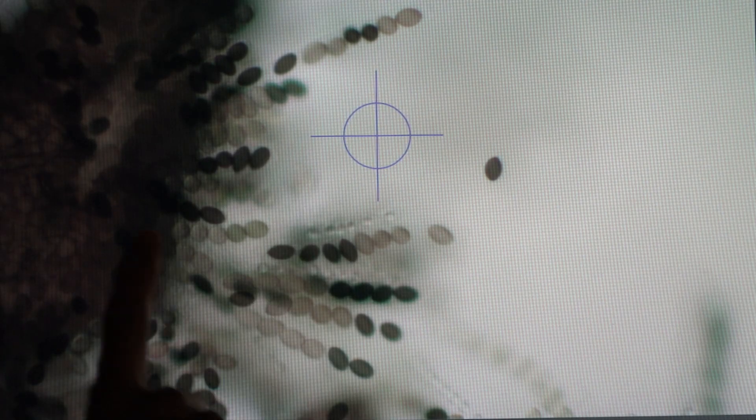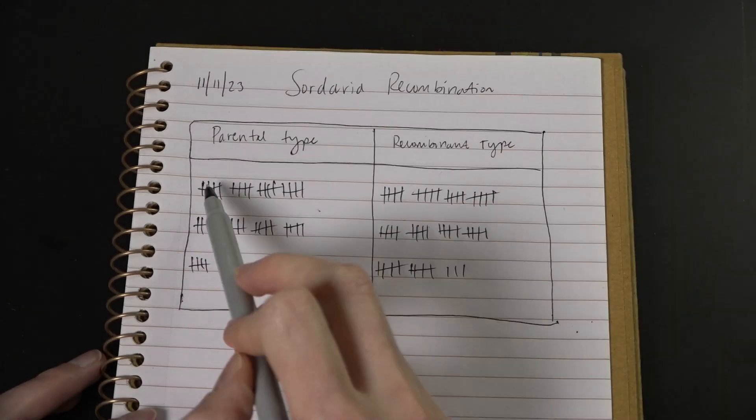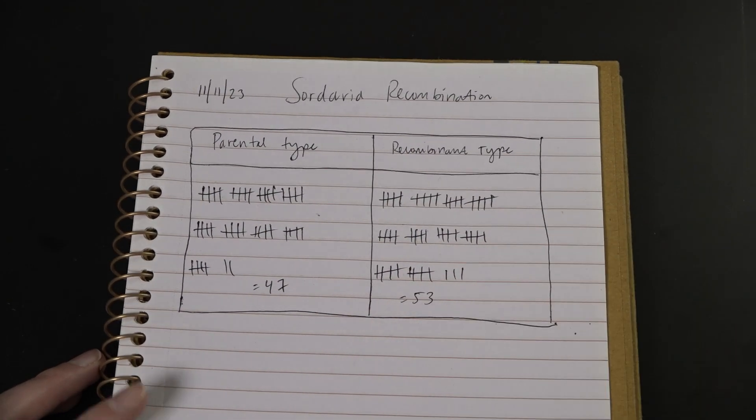I'm going to count at least 100 asci and score them as either parental type or recombinant type. I'm tallying them in a table as I go to help keep track.